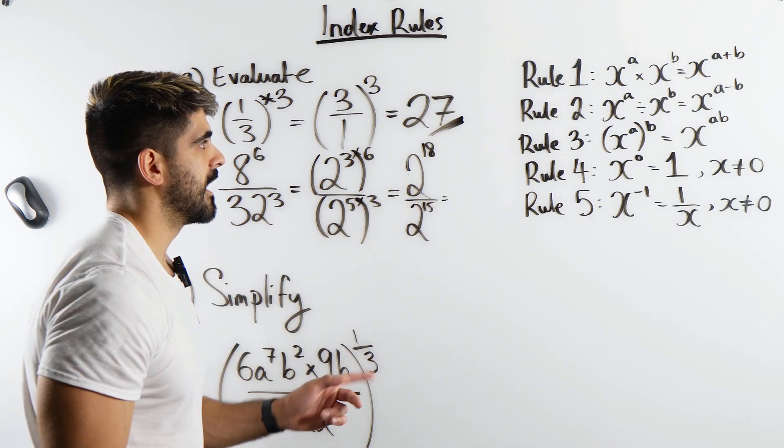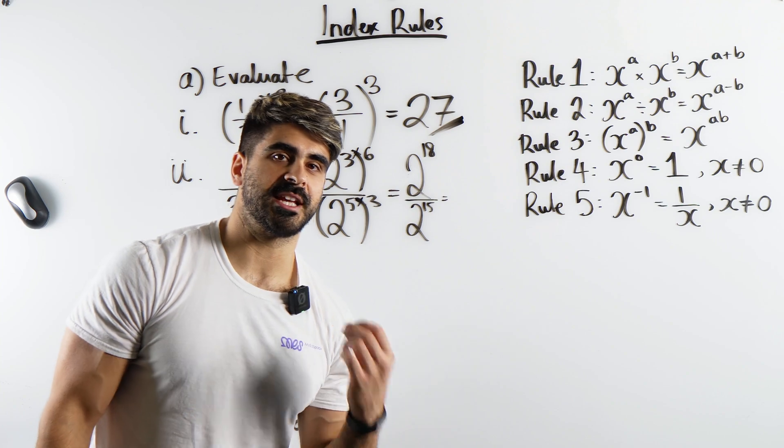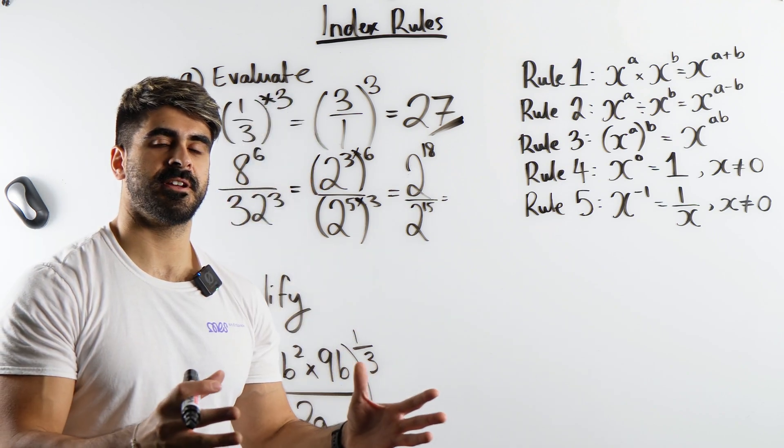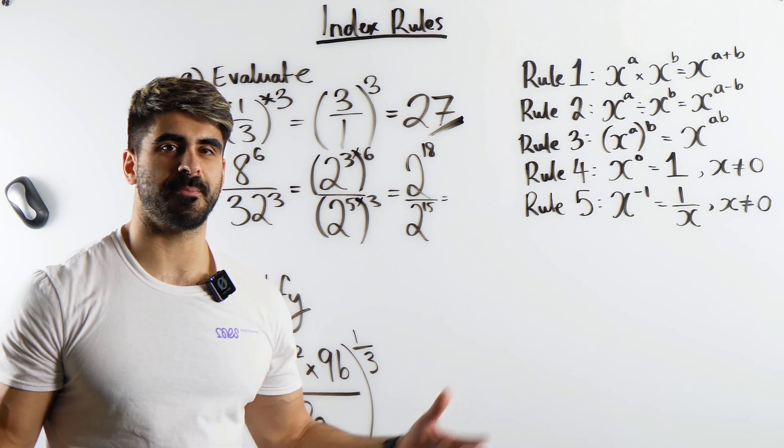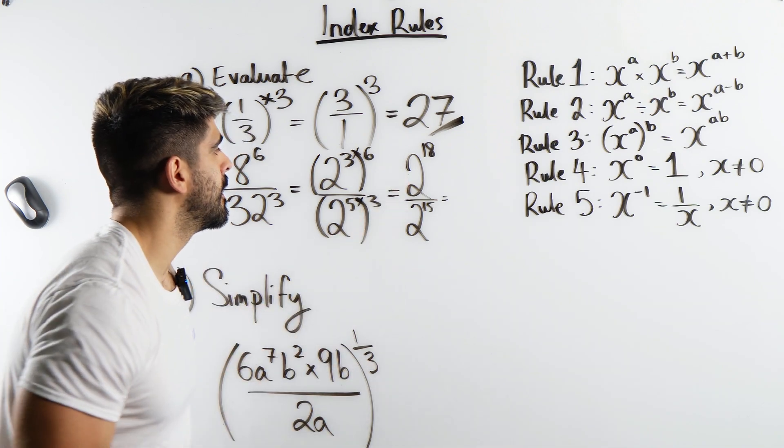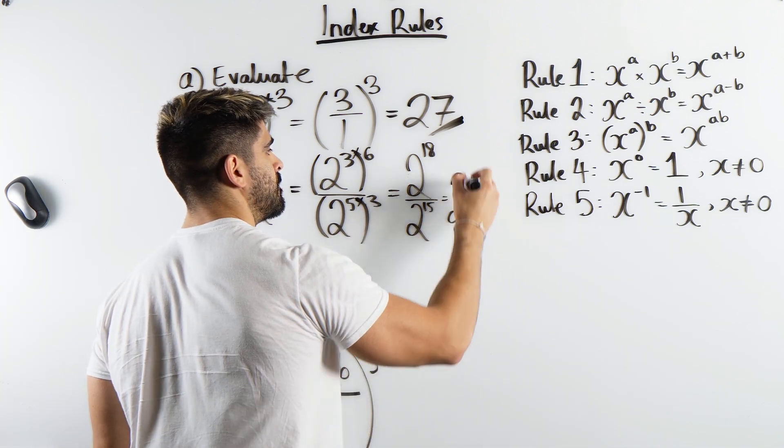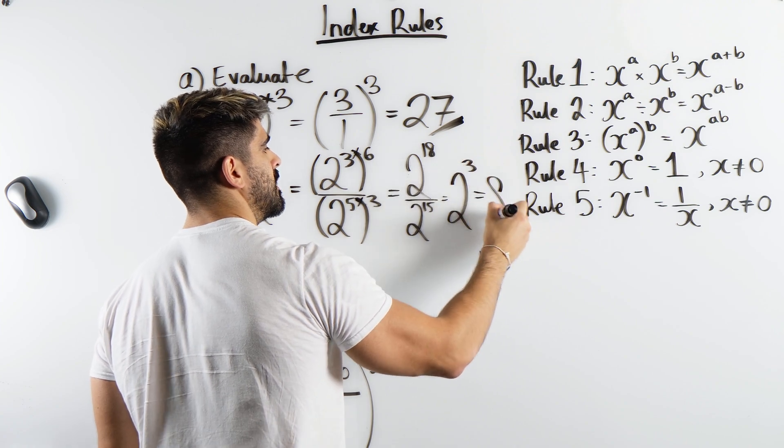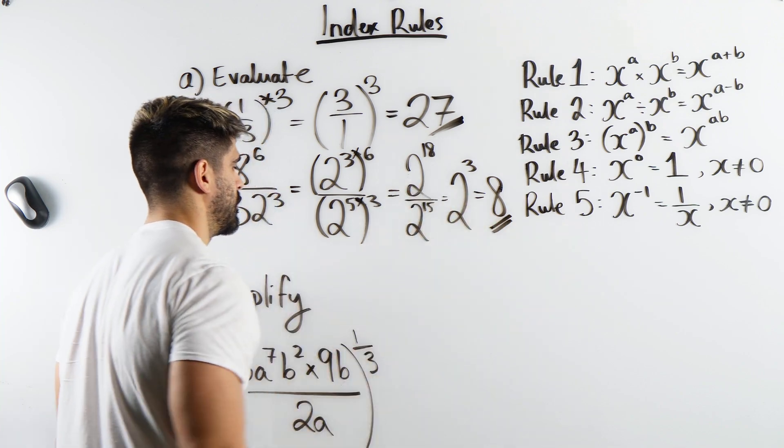Okay. Now we can use rule 2. When you take two numbers with the same base and you divide them, we subtract the powers. So we have 18 minus 15 which is 3, which we already know is 8. And that's how we evaluate that one.